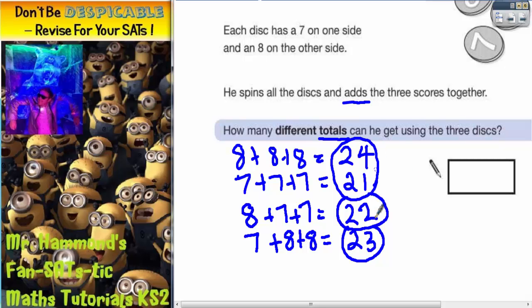Now we've got four different totals. We could have seven-seven-eight, but that's the same as 22, or eight-eight-seven, which is the same as 23. If we think about all the different combinations, these are the only four possible different totals we could get. So the answer is four.